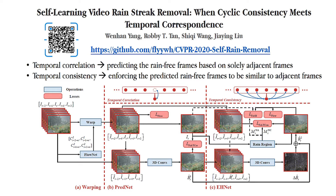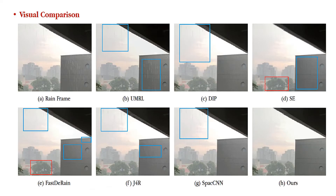In the second stage, we include the information of the current ring frame and force the generated results to be close to adjacent aligned ring frames. As shown in the results, our method provides better results with less remaining ring streaks and abundant details.